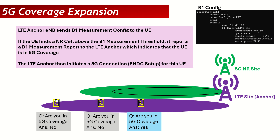In most networks we just put the B1 threshold based on default values — it's not really optimized. We can optimize it: for instance, a higher band can have a lower threshold, and a lower band can have a higher threshold. If I increase the B1 threshold of this cell to -110 dBm, that will increase my 5G coverage area. More mobiles will be able to access the 5G cell, giving us a better 5G coverage or a bigger 5G footprint. The B1 threshold is one of the simplest ways to increase 5G coverage.